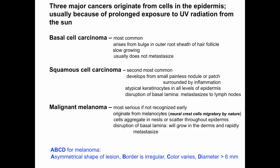Three main cancers can originate from cells in the epidermis, and these usually occur because of prolonged exposure to UV radiation from the sun. Basal cell carcinoma is the most common form of skin cancer, arising from the bulge in the outer root sheath of the hair follicle. Basal cell carcinomas are usually very slow-growing and typically don't metastasize. Squamous cell carcinoma is the second most common form of skin cancer, developing from small painless nodules or patches on the skin, usually surrounded by a small inflamed area. There are atypical keratinocytes in all levels of the epidermis — sometimes called carcinoma in situ when within the epidermis. If the basal lamina is disrupted, squamous cell carcinoma can invade the dermis and metastasize to the lymph nodes, making it more serious.